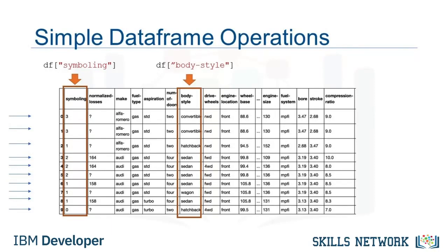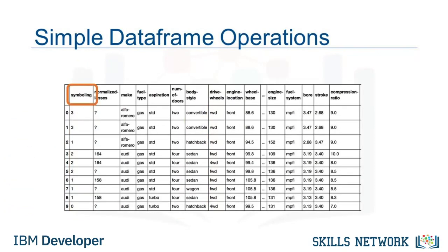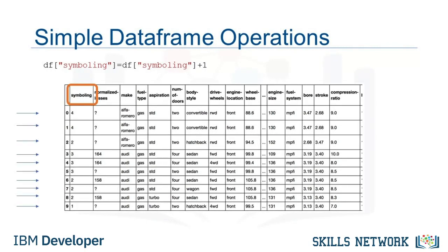Each of these columns is a pandas series. There are many ways to manipulate data frames in Python. For example, you can add a value to each entry of a column. To add one to each symboling entry, use this command. This changes each value of the data frame column by adding one to the current value.